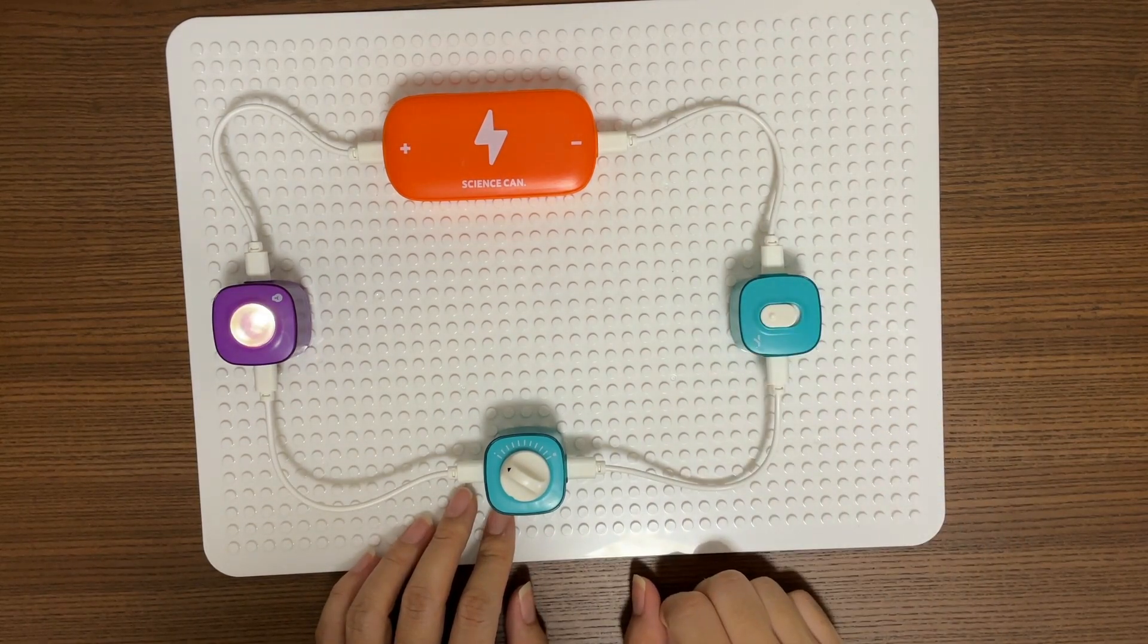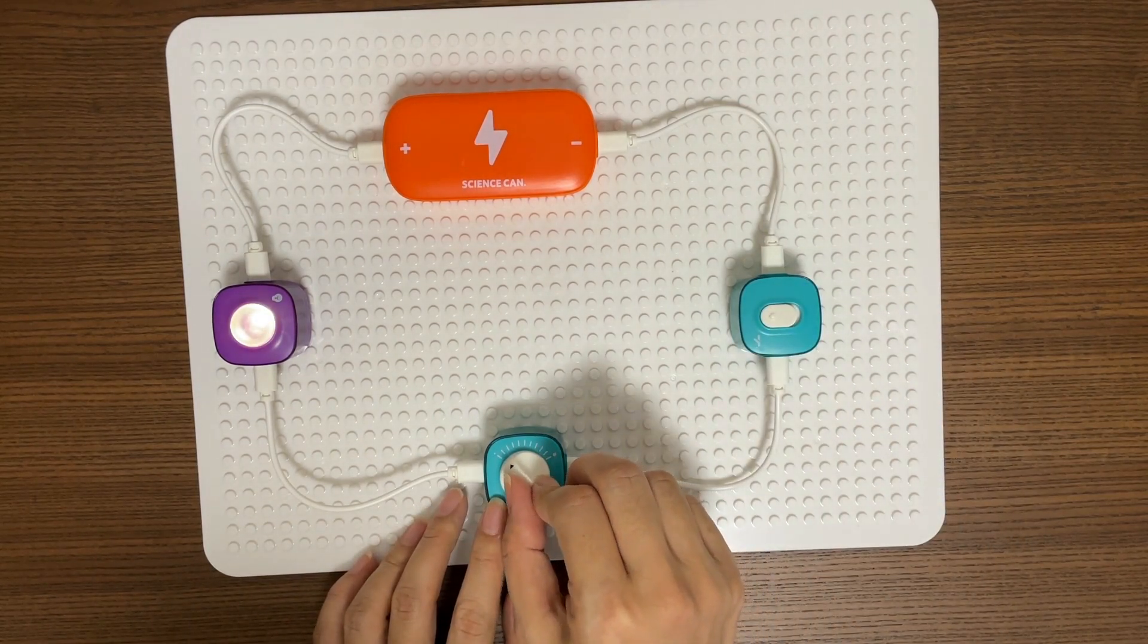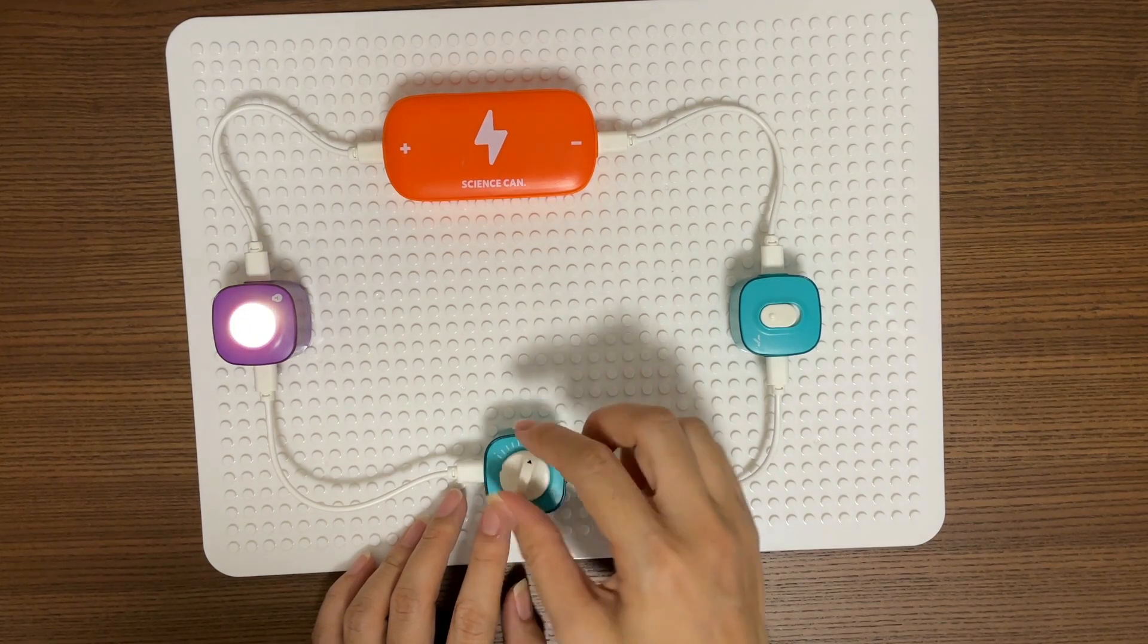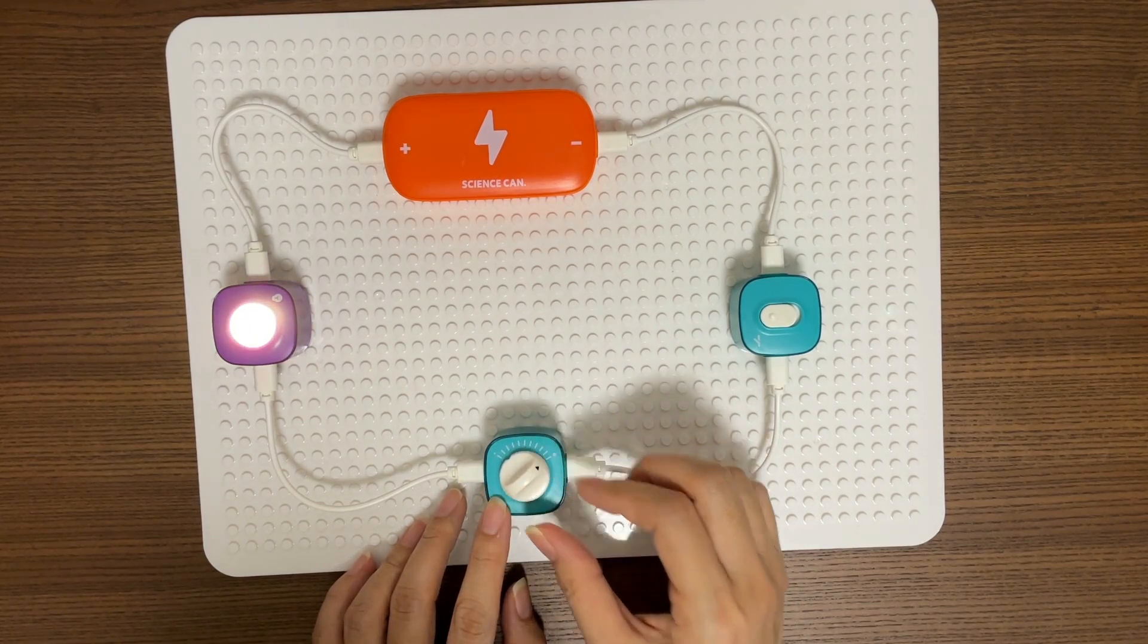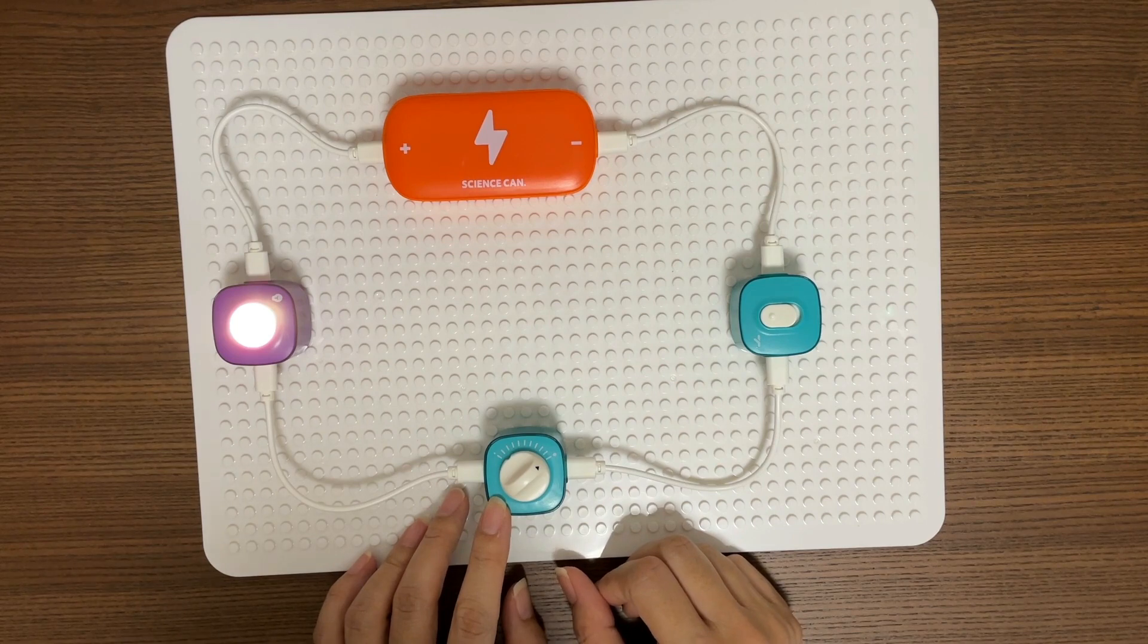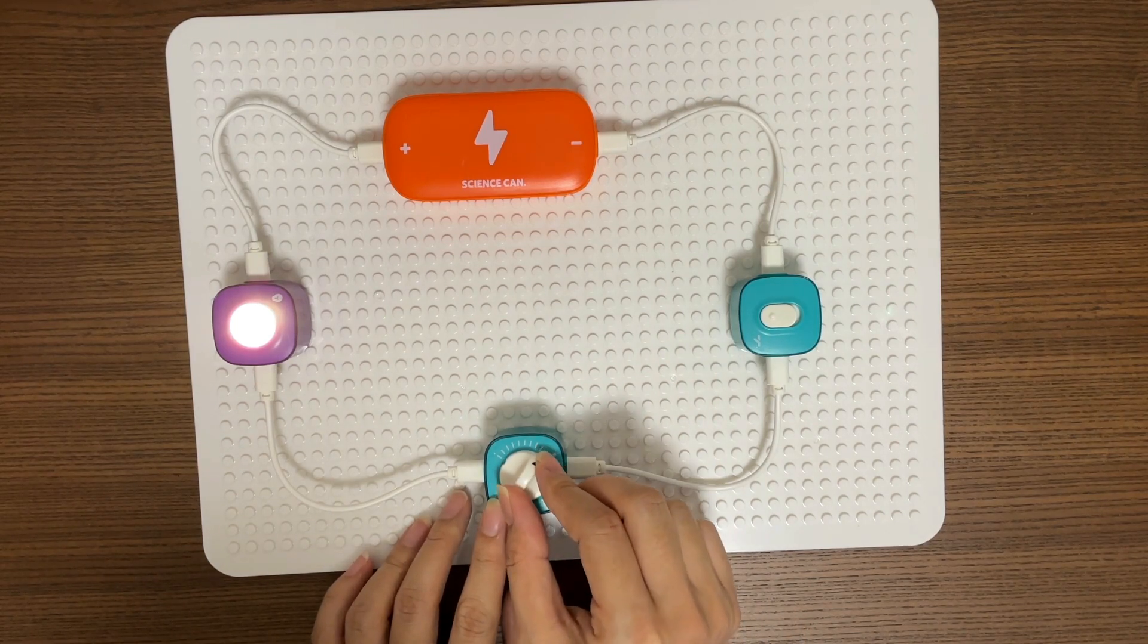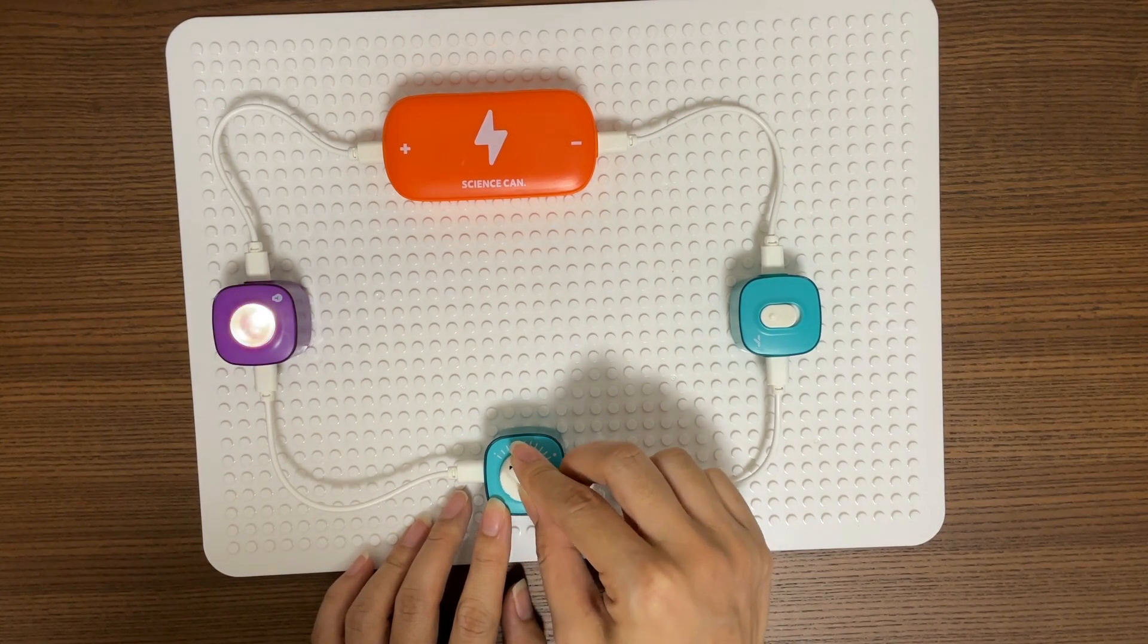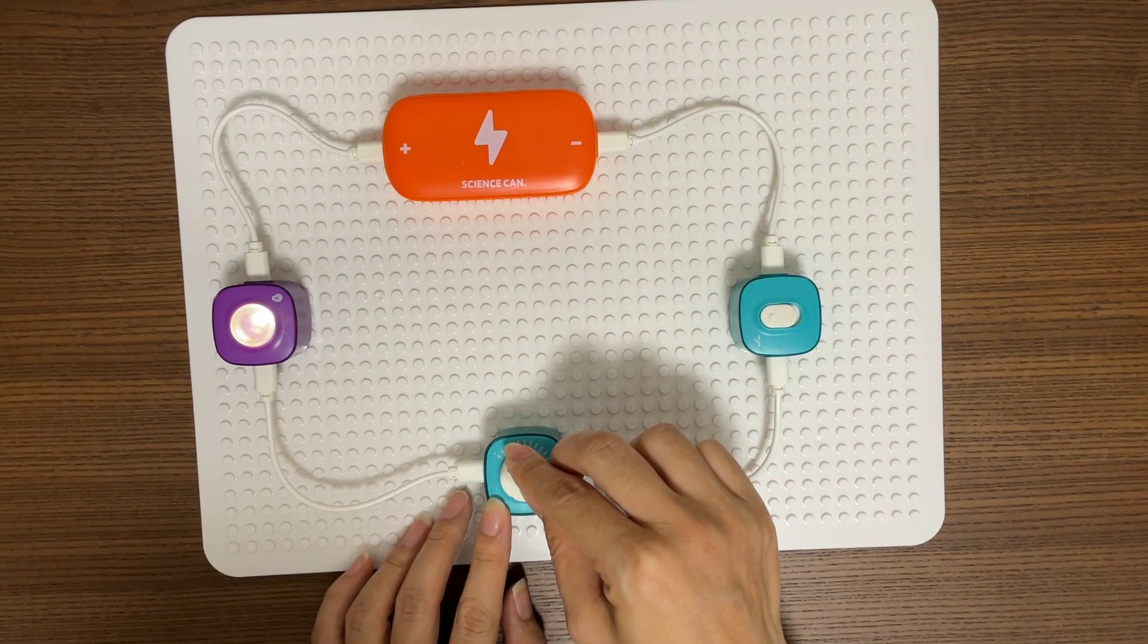Turn on the switch. The light is on. As we turn the knob, the light will become brighter. If we turn the knob to the opposite direction, the light will become dimmer.